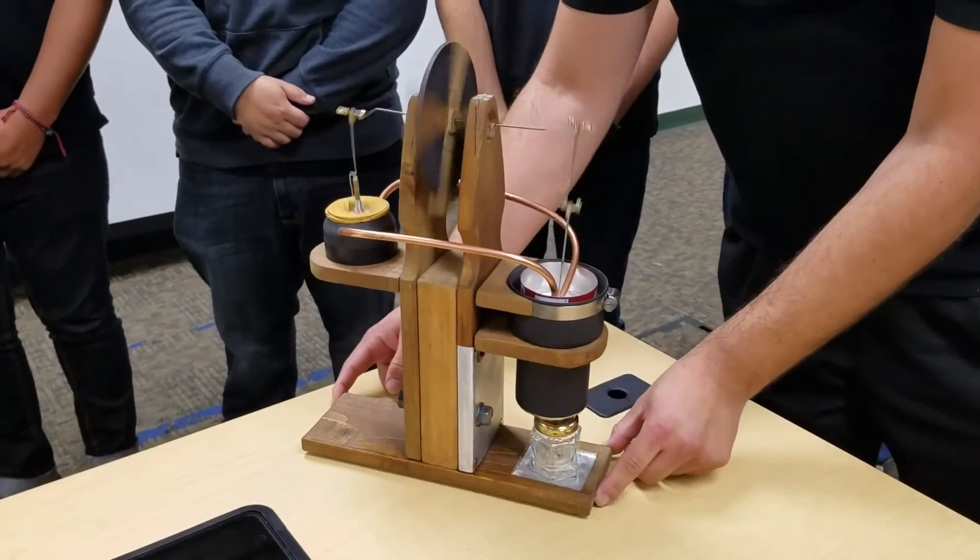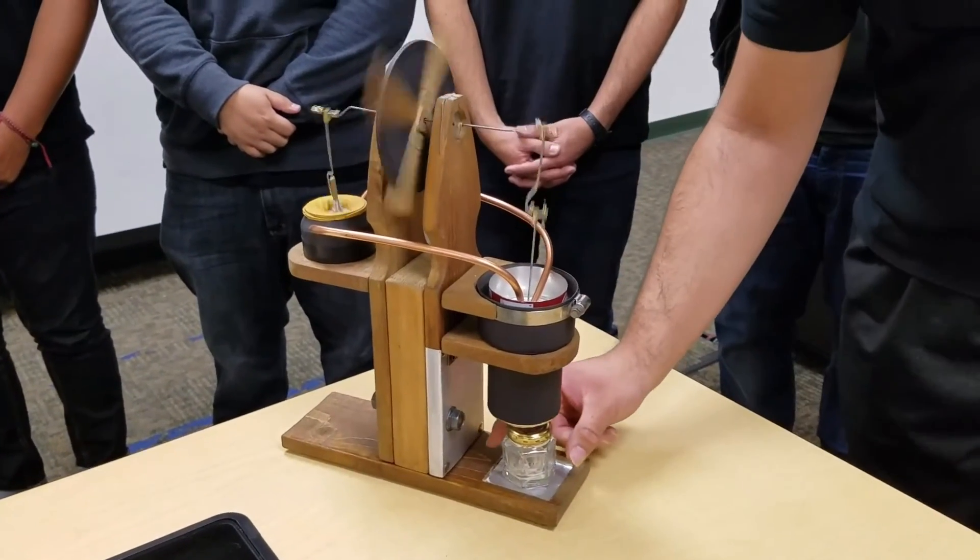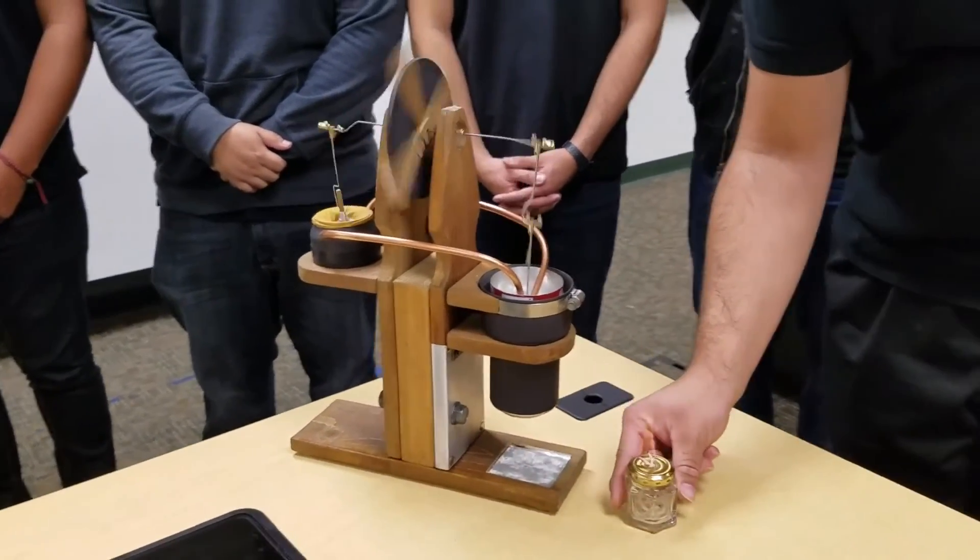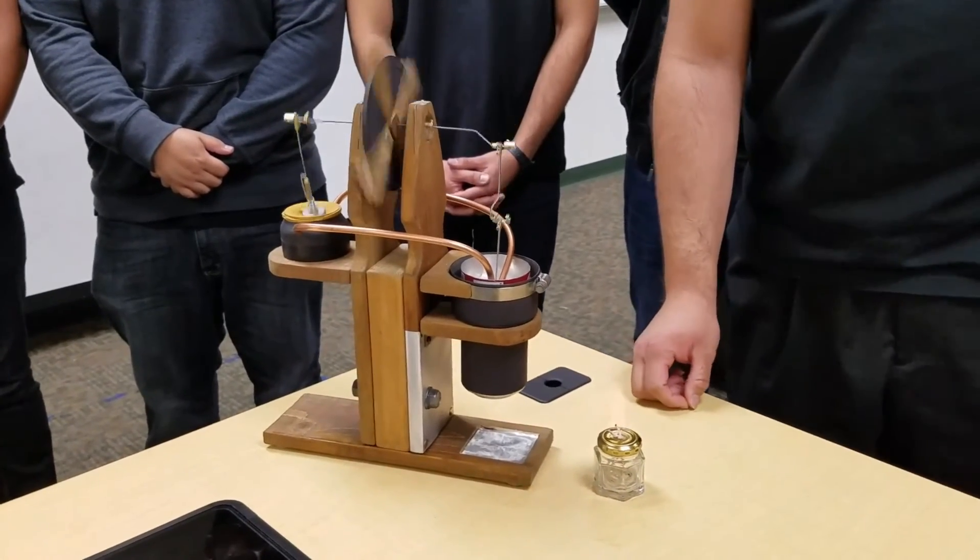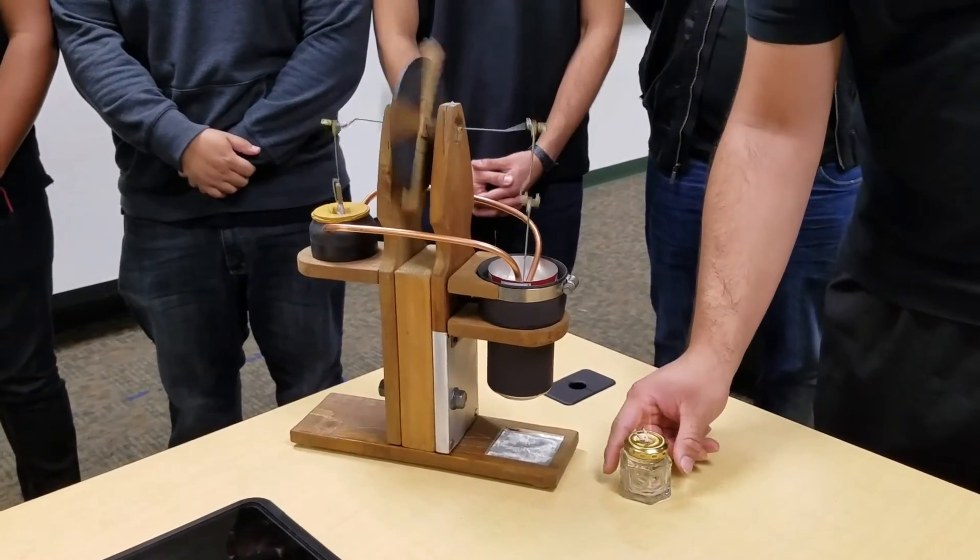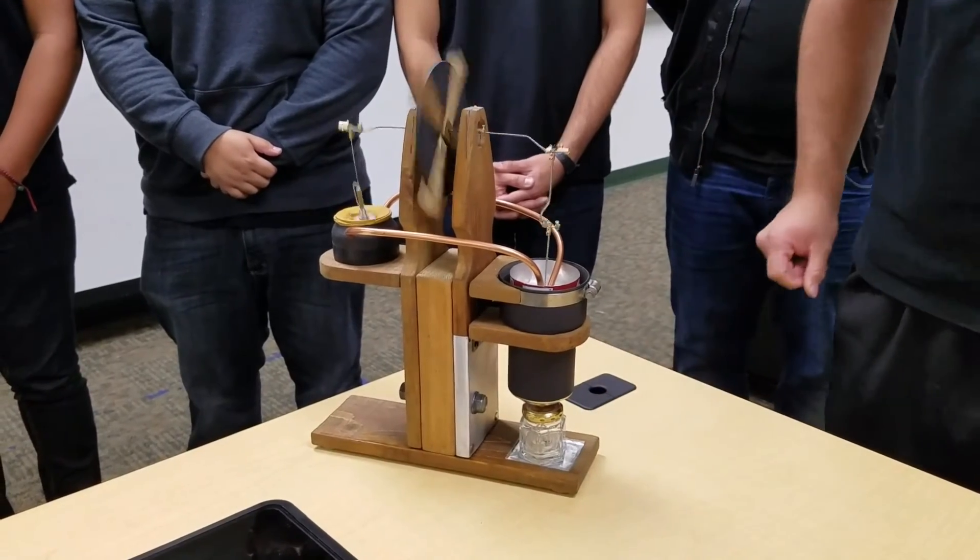Now, while the engine is running, we will perform the efficiency test by removing the heat source. It should slow down the engine. Now, we reapply the heat source, which should speed the engine back up.